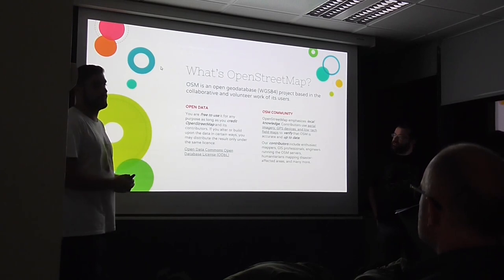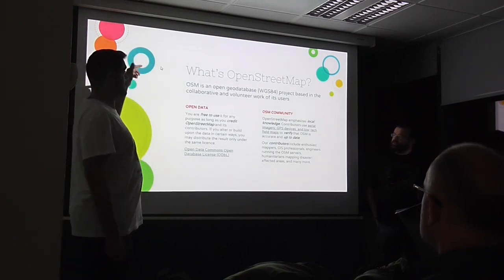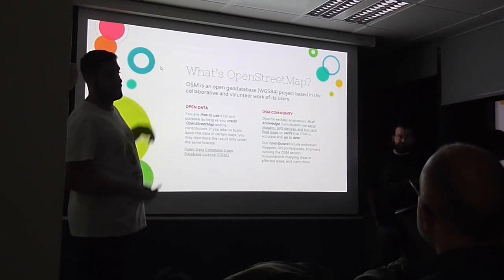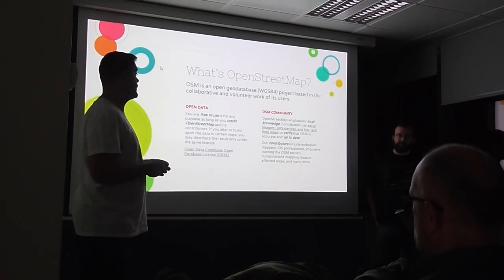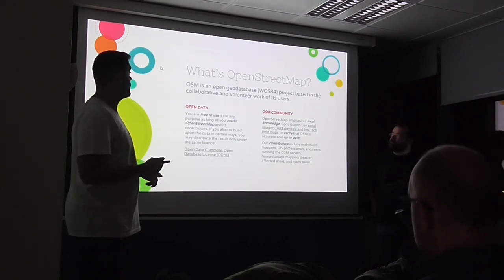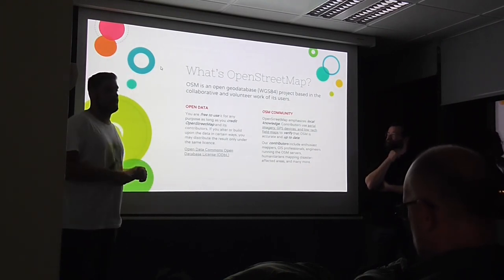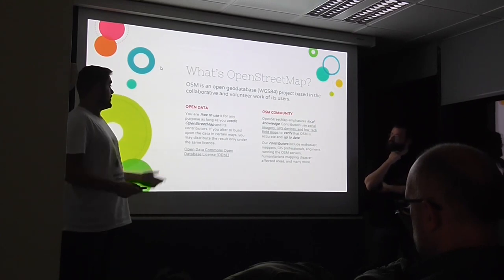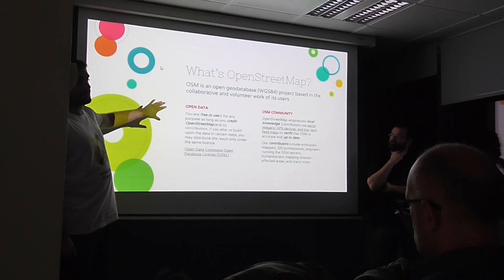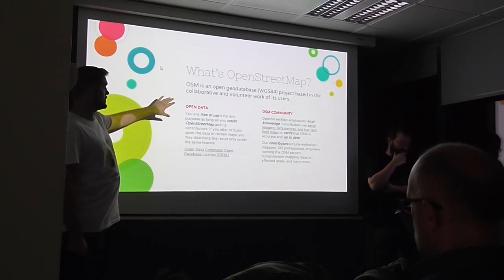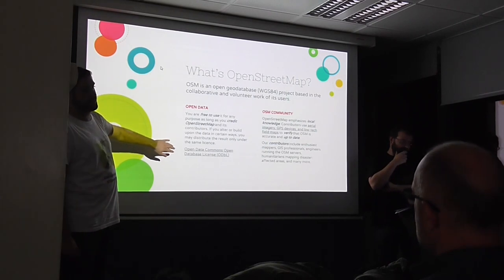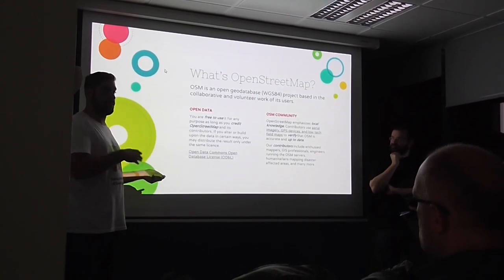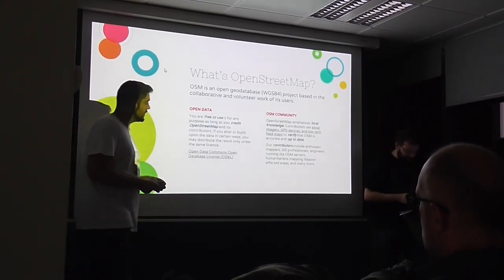What's OpenStreetMap? It is a geodatabase based on WGS-84, an approximation to cartographic use, and it's a project based on collaborative and volunteer work between users. So it's like a Wikipedia of maps. It's open data, a database, free to use, based on an Open Data Commons Open Database License — a different license than Creative Commons.